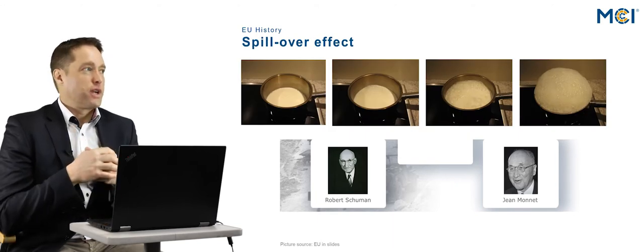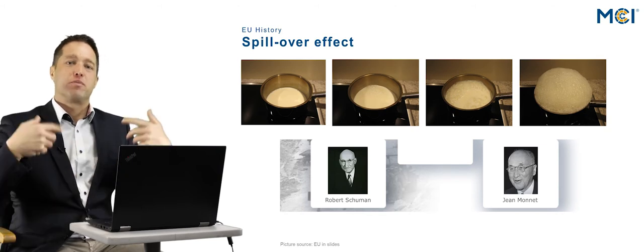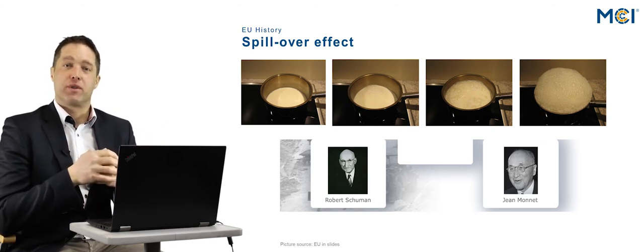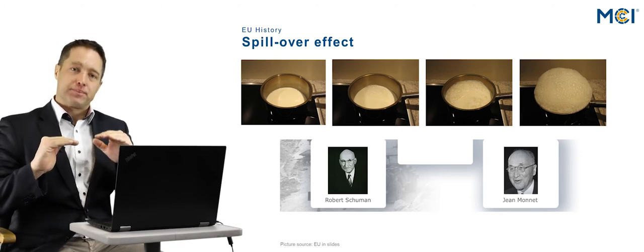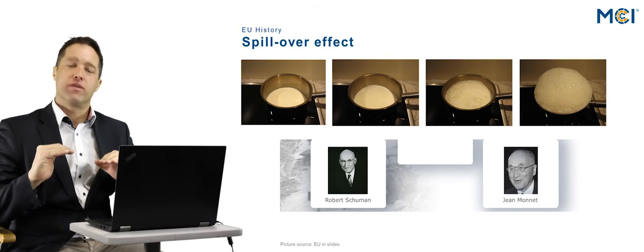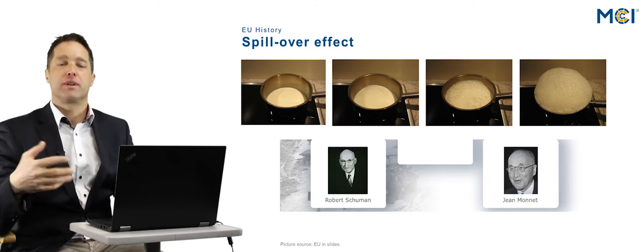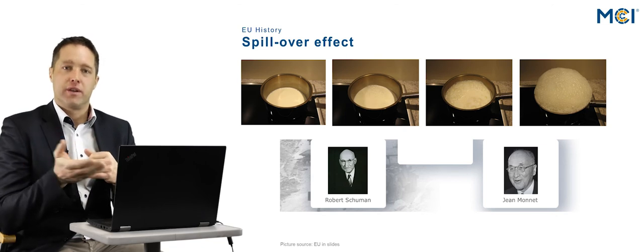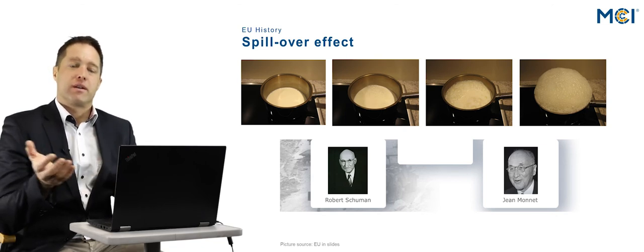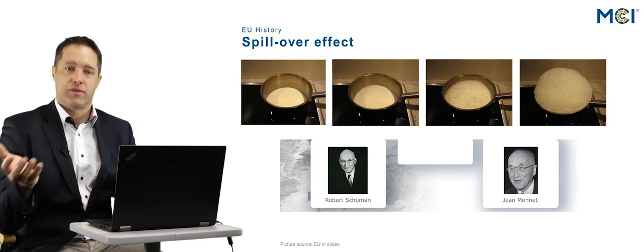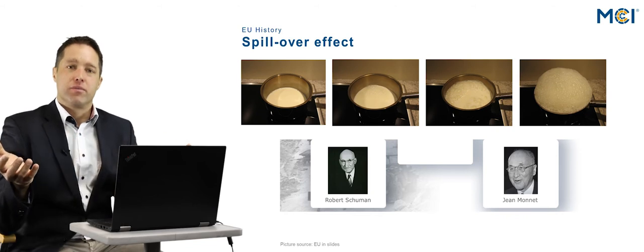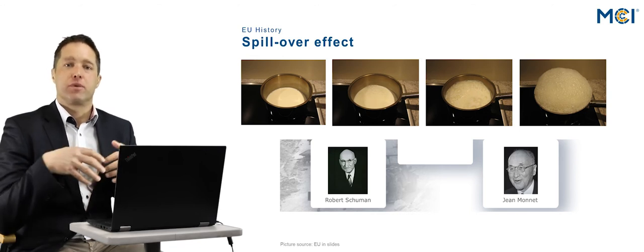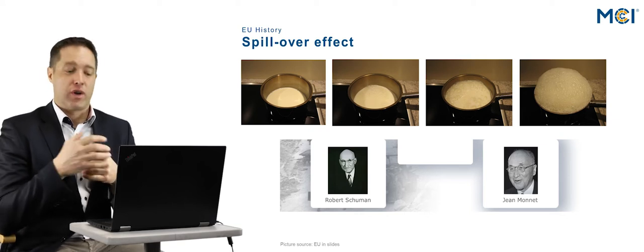Everyone knows what happens if you cook milk — it will spill over once the heat increases, and the very same effect took place with European integration. At the beginning the level of milk was very low, but working together in one field automatically led to the necessity to also work together in other fields. That was also a very clever idea of Jean Monnet and Robert Schumann: to make countries that had been opposing each other in wars for decades work together, so that they would have disputes on conference tables but not on battlefields.